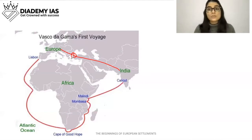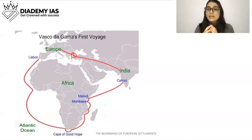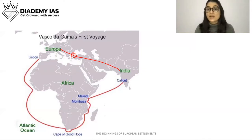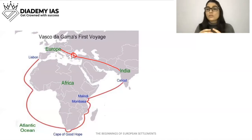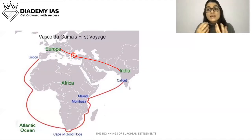So in this period, Europeans started looking for a new trade route to trade with India. This was also the Renaissance period in Europe — when the Church's authority, which had been very strict, began to wane, and a new period began. The Renaissance period saw the start of scientific discoveries, which motivated Europeans to explore new routes.